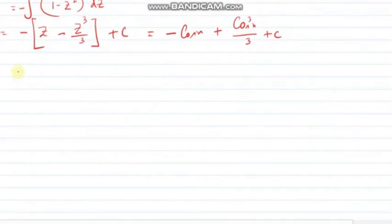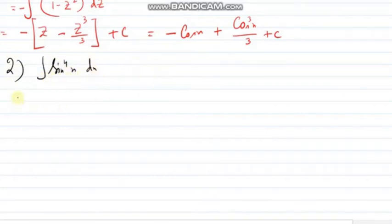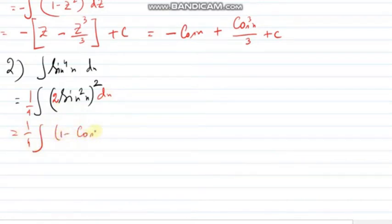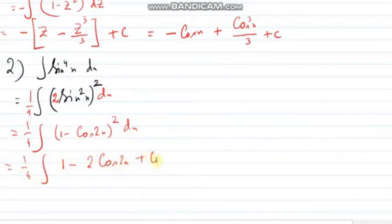In the last example I discussed sin³x — that is, sin or cos raised to an odd power. What happens if it is raised to an even power? In that case, I can write sin⁴x as (sin²x)². Multiplying inside by 2 and keeping 1/4 outside (since 2² = 4), I use the formula: 2sin²x = 1 − cos2x. So sin⁴x = (1/4)(1 − cos2x)². Expanding the bracket: 1 − 2cos2x + cos²2x dx.